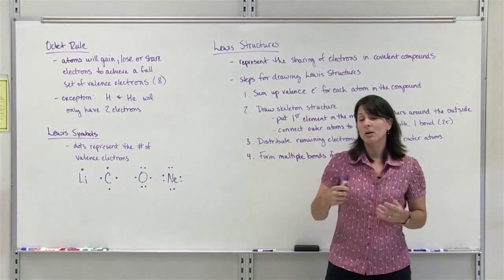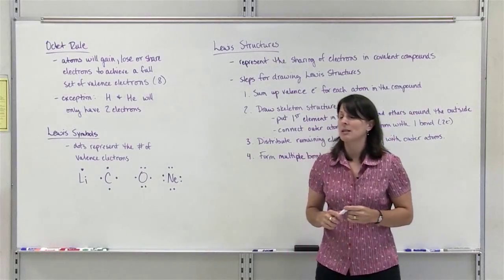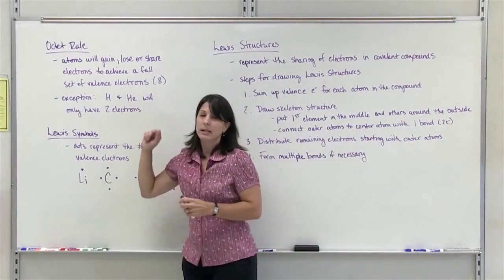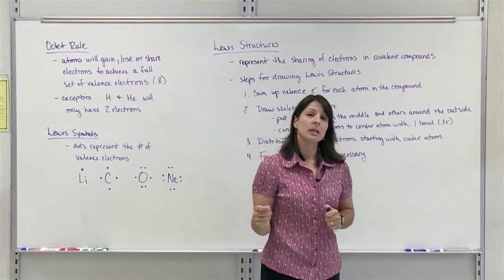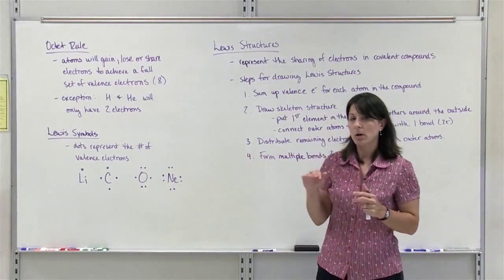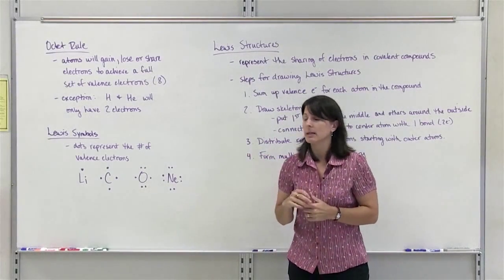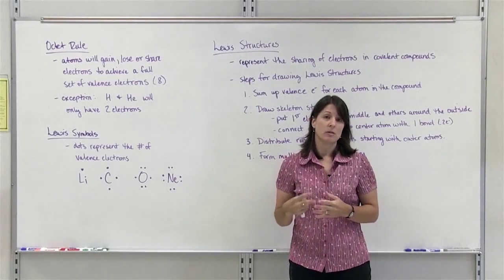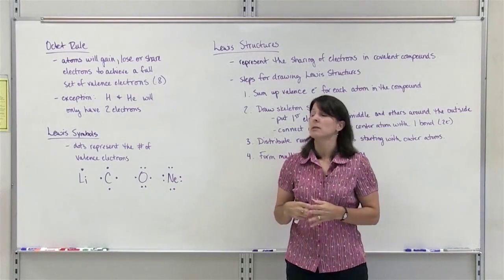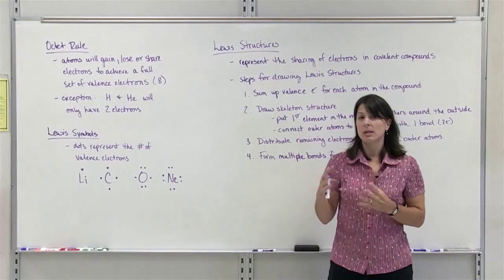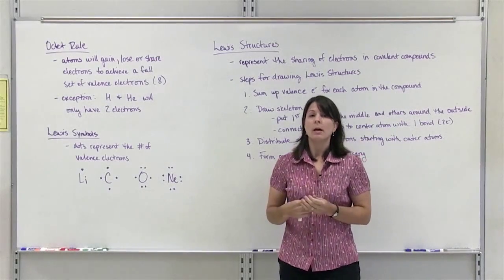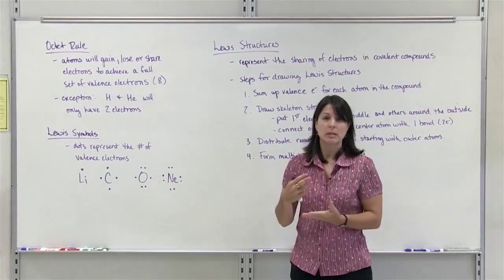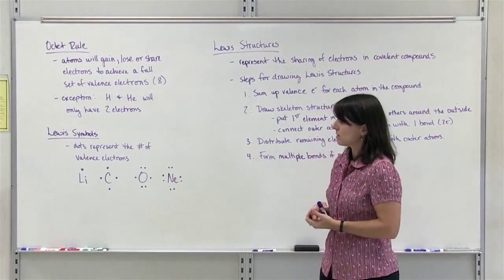However, there are a couple of exceptions to the octet rule, and those are hydrogen and helium. Since hydrogen and helium are on the first row of the periodic table, a full set of valence electrons consists of only 2 valence electrons. So hydrogen and helium will only have 2. All the other elements on the periodic table will try to achieve 8 valence electrons.